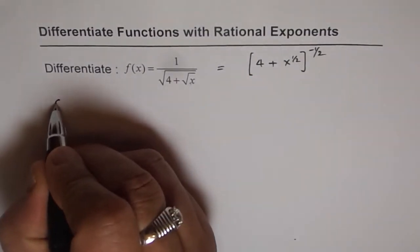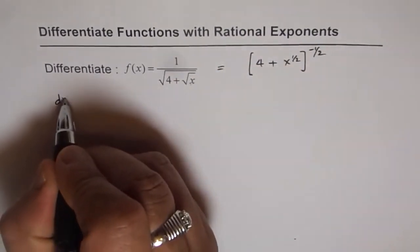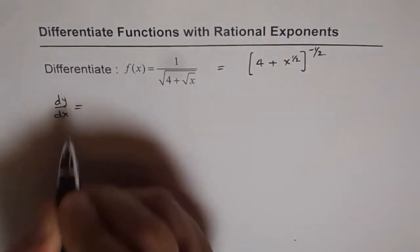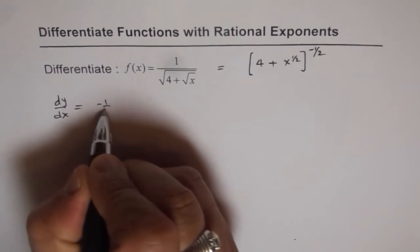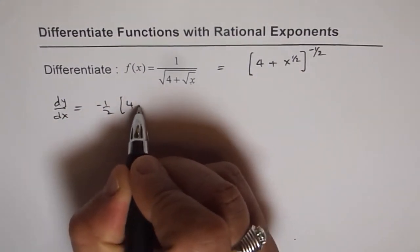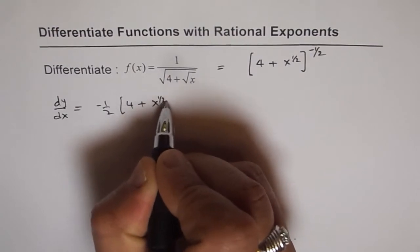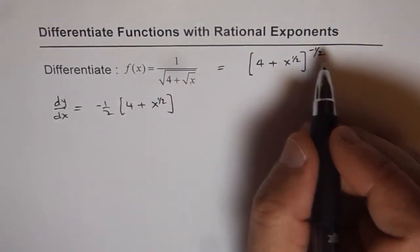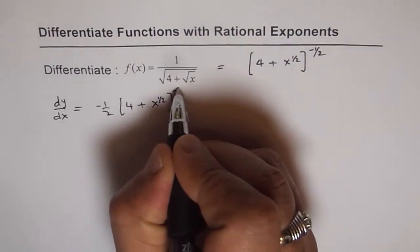So now we can write y equals to this and we say dy dx equals minus half. So we are differentiating this function 4 plus x to the power of half. And minus half minus 1 will give us minus 3 over 2.